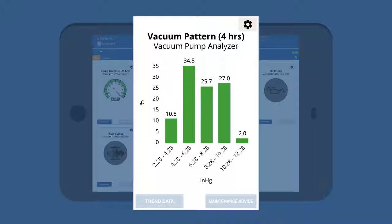On this dashboard, the vacuum pattern has shifted, showing less idle time, which most likely indicates that you should check the material supply or check for vacuum leaks in your lines.